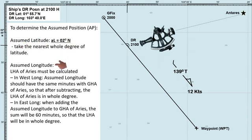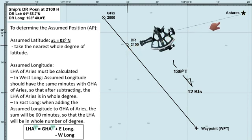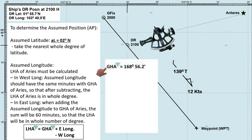For the assumed longitude, we need to calculate the local hour angle, or LHA of Aries, and this is the formula. LHA of Aries is equal to GHA of Aries plus easterly longitude, and minus westerly longitude. Let's say at the time the sextant altitude of the star Antares was taken, the Greenwich hour angle, GHA of Aries was 168 degrees, 56.2 minutes.